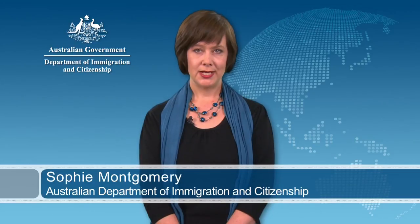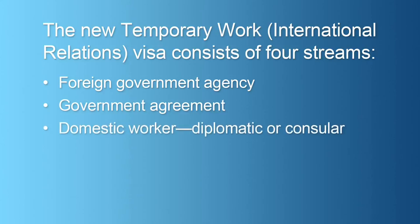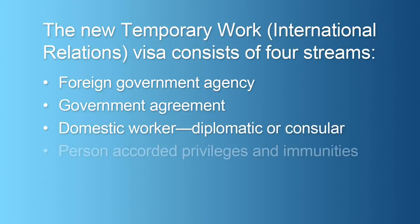The new temporary work international relations visa consists of four streams that cater for Australia's international obligations: foreign government agency, government agreement, domestic worker, diplomatic or consular, and persons afforded privileges and immunities.